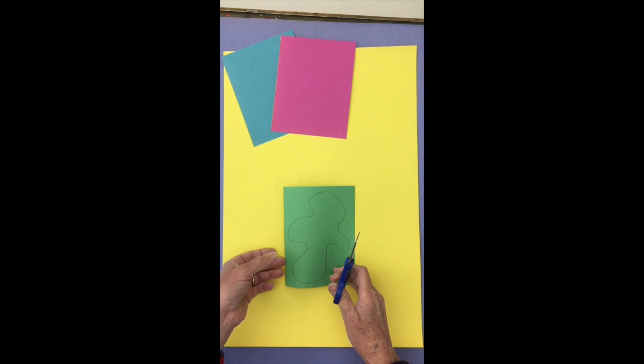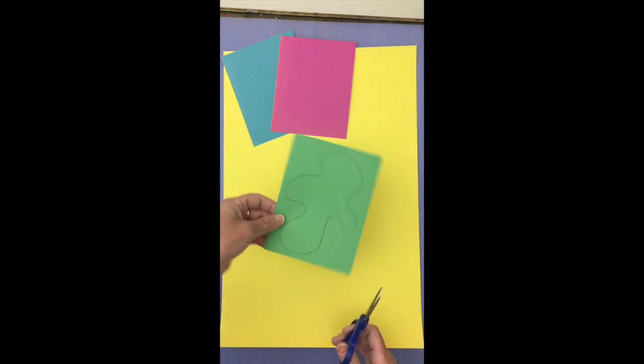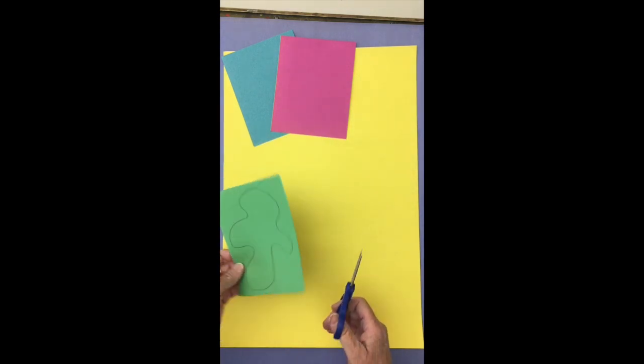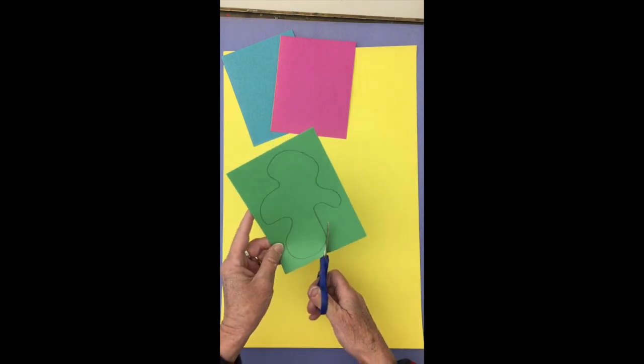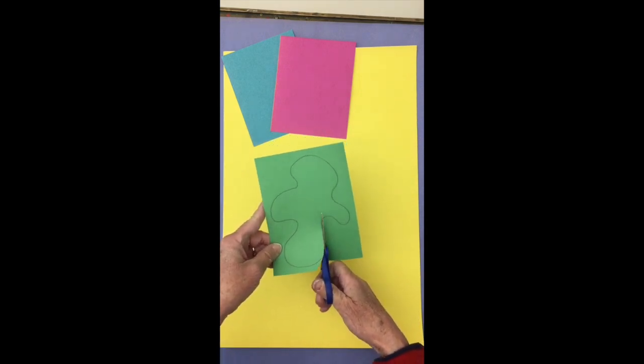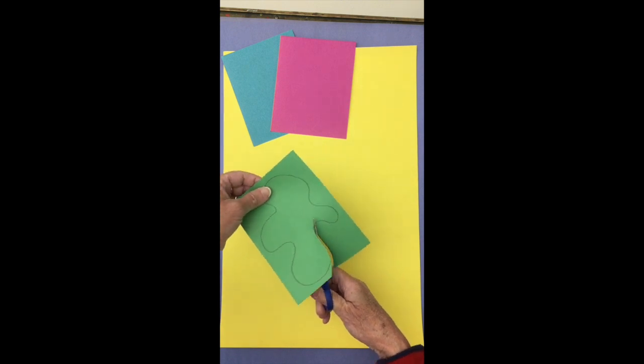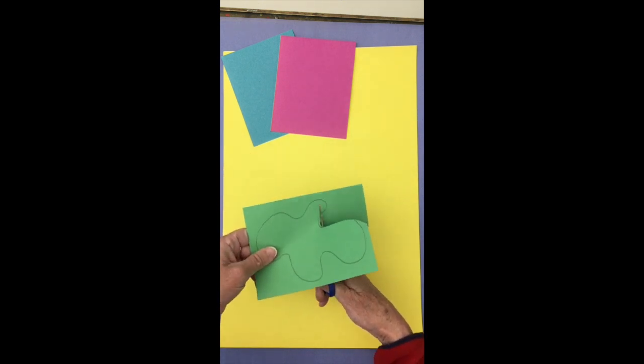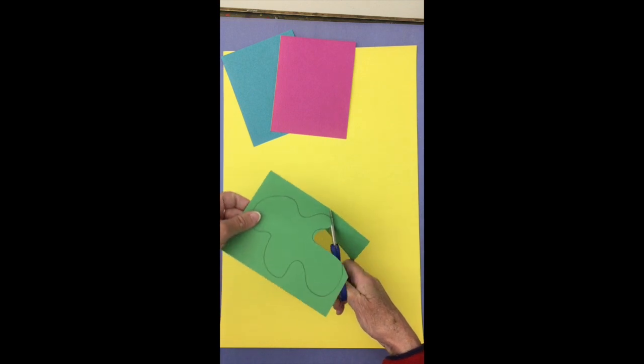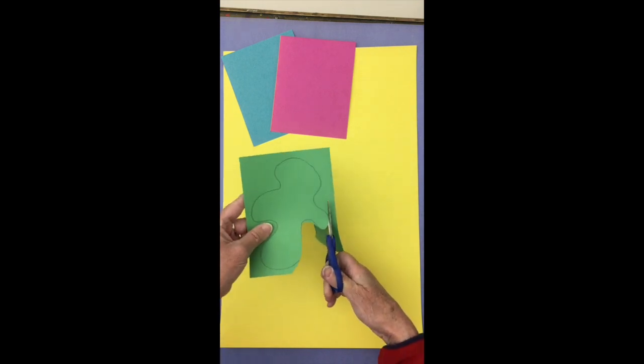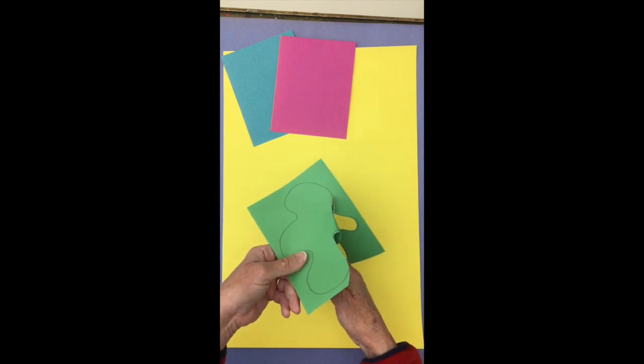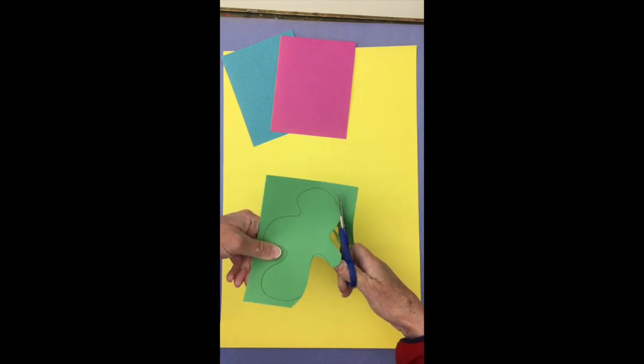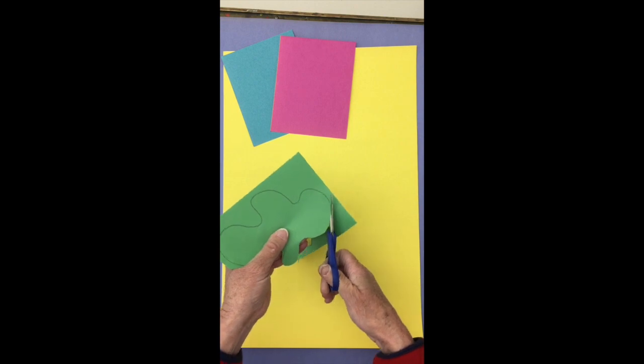I have my scissor hand and I have my helping hand. My helping hand is going to do all the turning while my scissors point straight up. I'm going to cut slowly and see if I can cut out my shape in one piece. I'm going to save the rectangle part and get my shape.